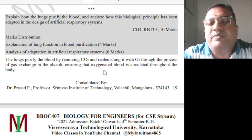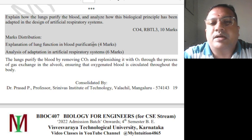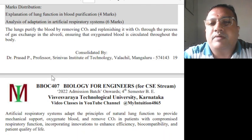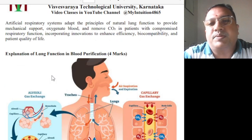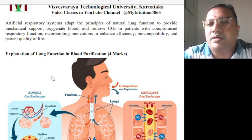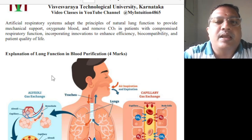The question is: how do the lungs purify the blood, and analyze how its biological principle has been adapted in the design of an artificial respiratory system. Lungs purify blood by removing carbon dioxide and replenishing it with oxygen through the process of gas exchange in the alveoli, ensuring oxygenated blood is circulated throughout the body. Artificial respiratory systems adapt these principles to provide mechanical support, oxygenate the blood, remove carbon dioxide in patients with compromised respiratory function, incorporating innovations to enhance efficiency, biocompatibility, and patient quality of life.